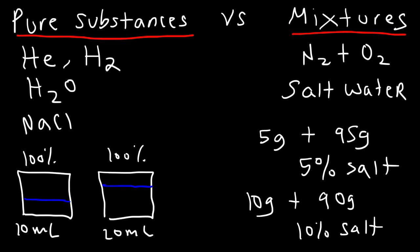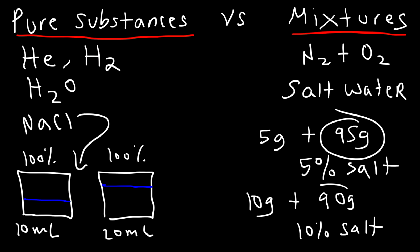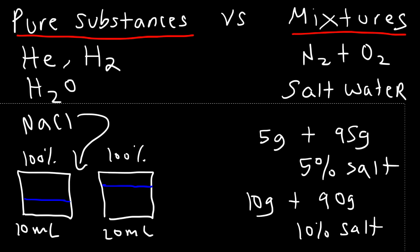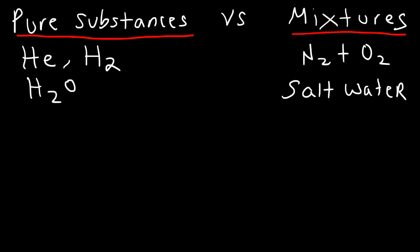Regardless of whether you have a little or a lot of a pure substance, it's still 100% pure — you cannot change the composition. The only way to change the composition is to create a mixture. If you add salt, it's no longer pure water; it could be 95% or 90% water, and once the composition changes, you have a mixture, not a pure substance.